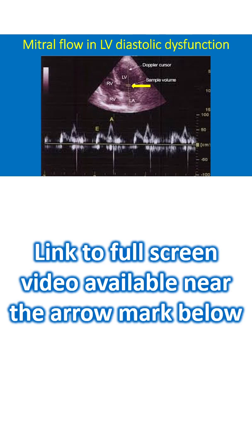The initial portion of the mitral diastolic flow is called the E wave — early diastolic — and the final portion, which occurs during atrial systole, is called the A wave.